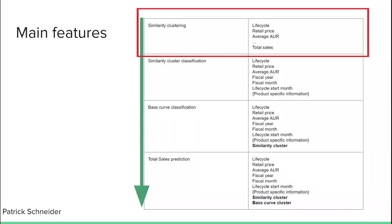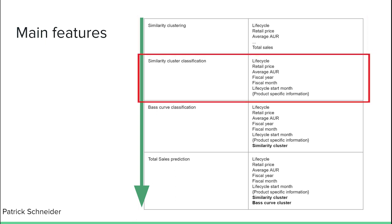Now the important step of the used features. We had four central clustering, classification, and regression components. For the similarity clustering, the product lifecycle was used as well as the retail price and average IR. Other features can be used that might be a deciding factor for similarity. The clustering was done over the total sales volume of each past product. In the second component for cluster classification of the products, the fiscal year, month, and start month of the lifecycle were used, as well as features that describe the products, like color, brand, product group, and product subgroup.